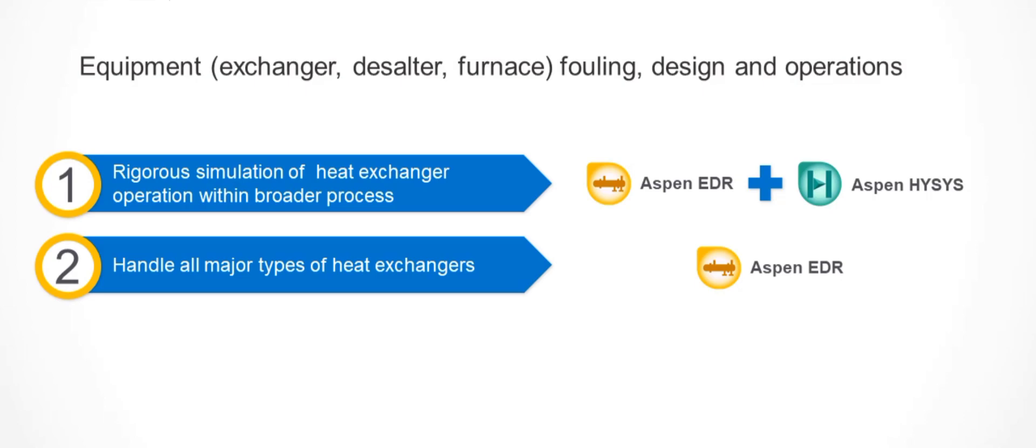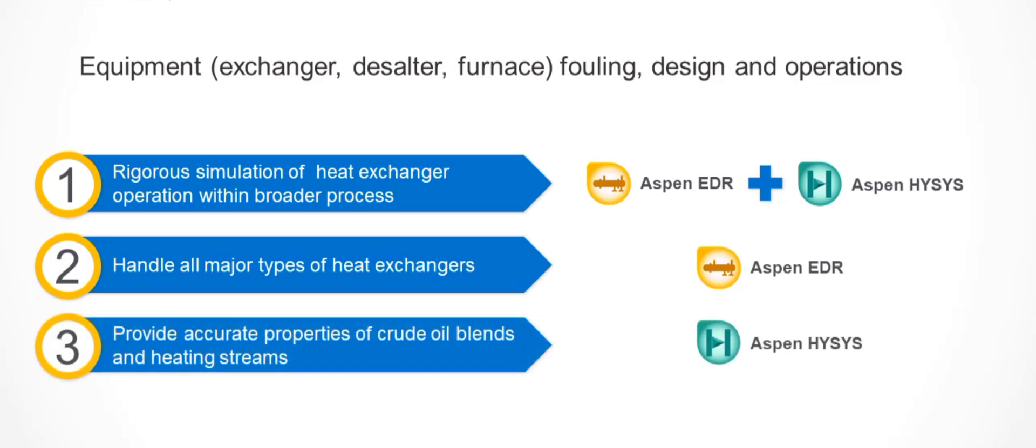The assay management capability in Aspen HYSIS is especially designed to characterize crude oil assays in terms of standard sub-components that can then be used to analyze the composition of the crude oil blend and accurately predict resulting plant physical properties. This allows users to accurately determine the crude oil properties to compute heat transfer coefficients.